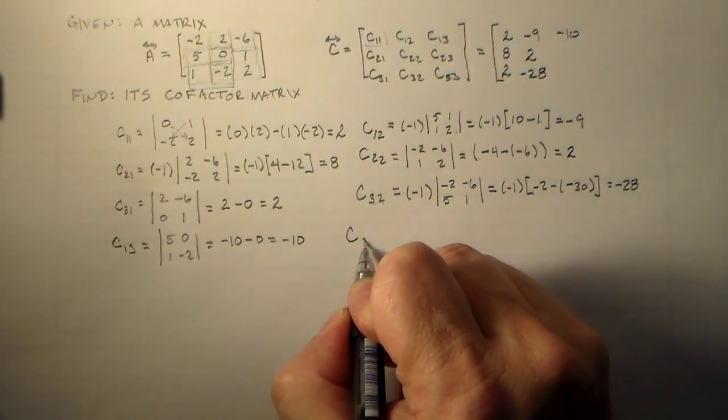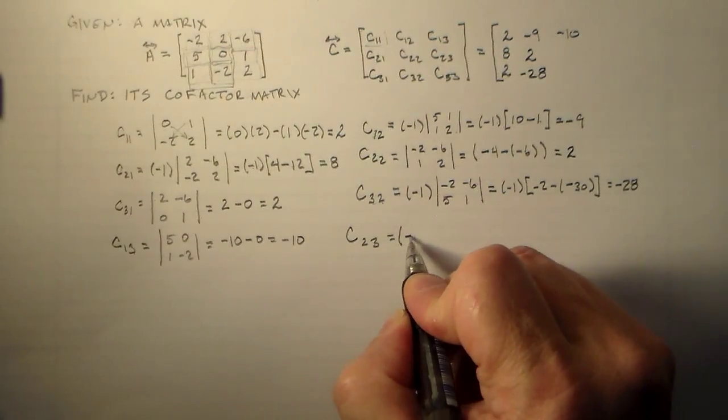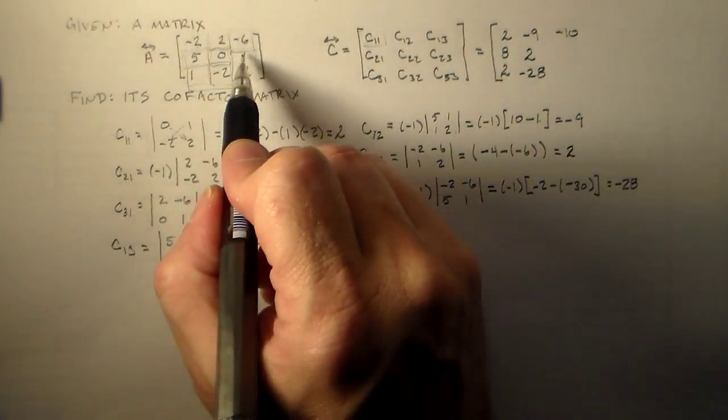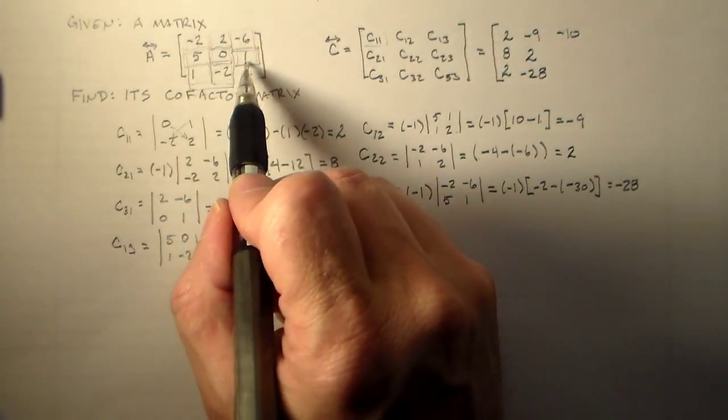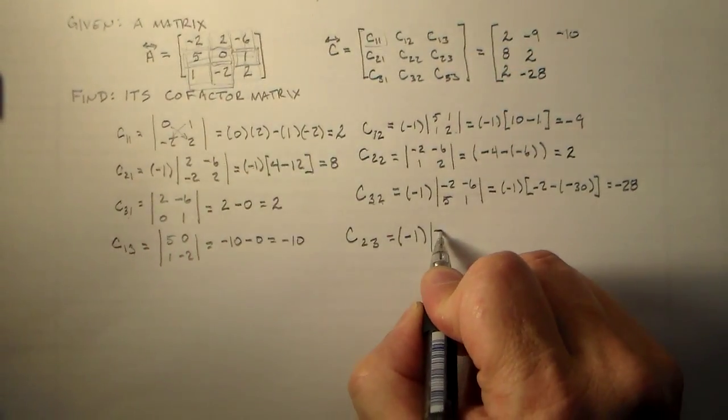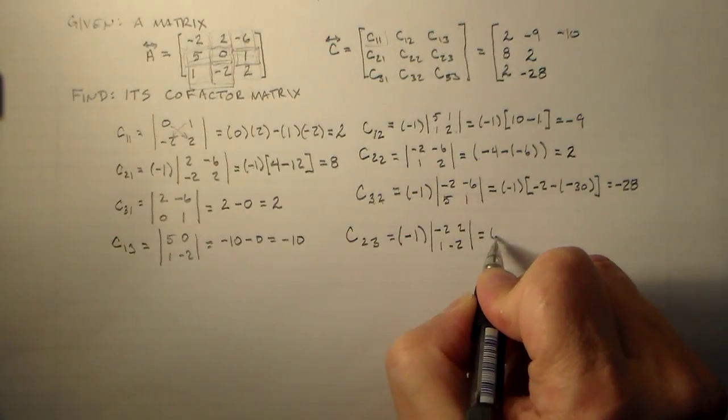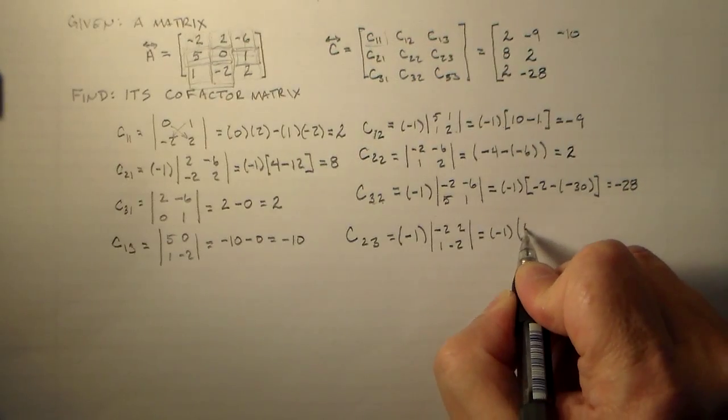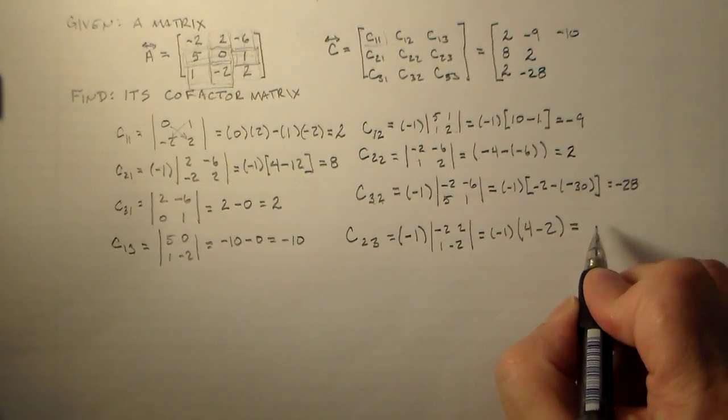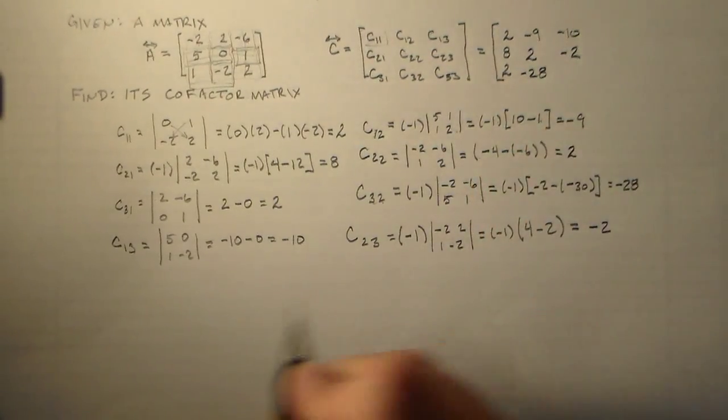Then we have C23. That's 5. 2 plus 3 is 5. So we've got a minus 1. Everything's going good. Minus 1. Everything not here or here. So we have minus 2, 2, 1, minus 2. So that's minus 1 times 4 minus 2, which is equal to minus 2.